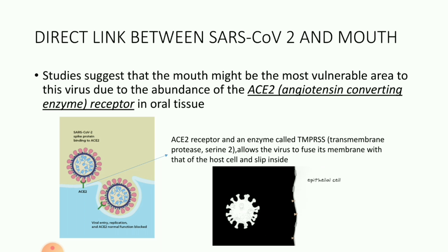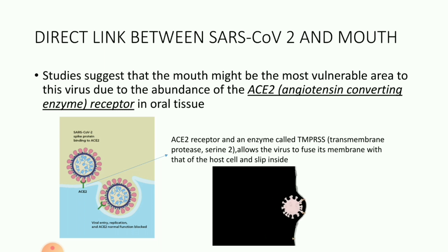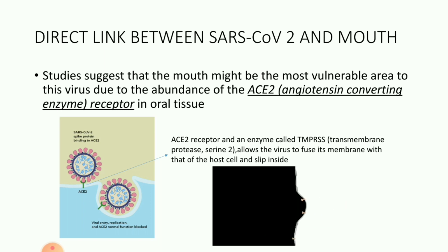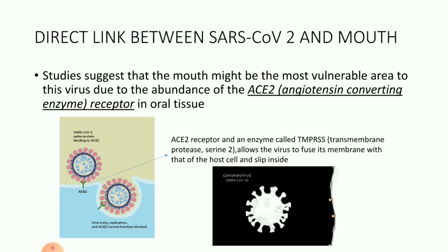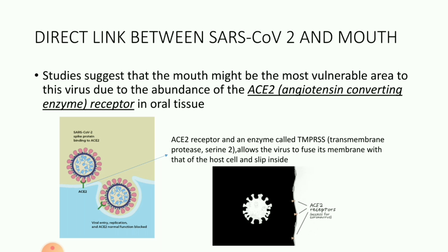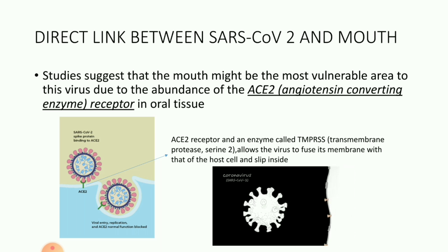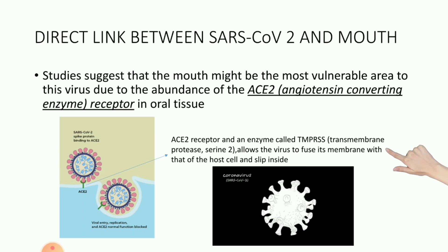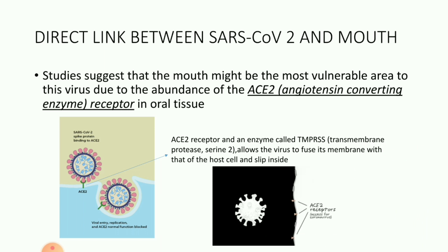But before that, we need to learn what is the direct link between the coronavirus and the mouth. Some studies suggest that the coronavirus has high affinity for ACE2 receptors — that is angiotensin converting enzyme receptor. Studies suggest that the mouth might be the most vulnerable area to this virus because of the abundance of the ACE2 receptor in the oral tissue. This ACE2 receptor, along with an enzyme called transmembrane protease cell 2, allows the virus to fuse its membrane with that of the host cell, and in this way the virus slips inside the cell.